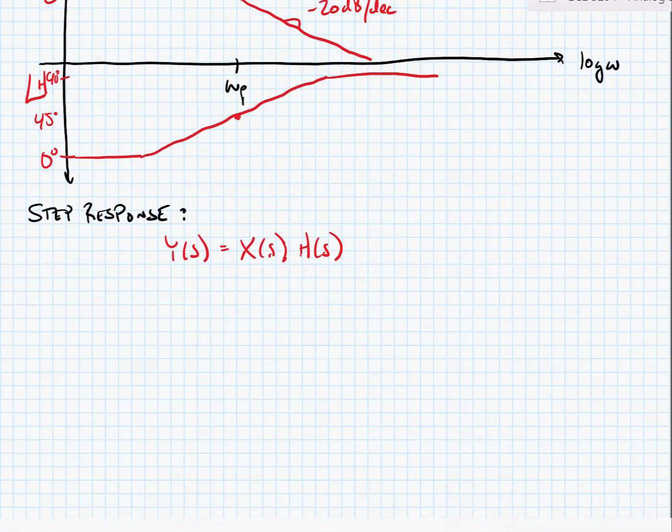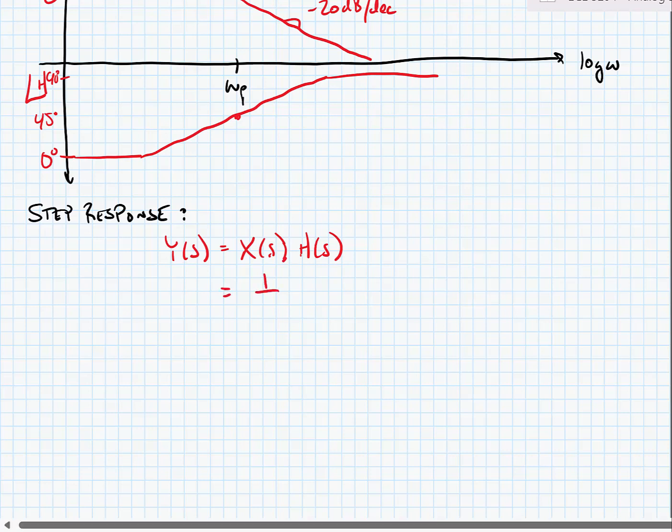So our step response again: y of s, the output, is equal to x of s, the input, times the transfer function. This is equal to 1 over s times omega p divided by s minus omega p.